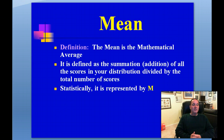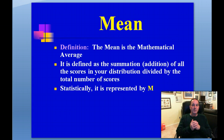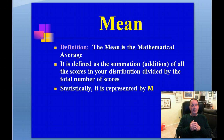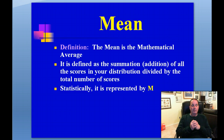What is the mean? The mean is just another term for the mathematical average — the average of the numbers. It's simply defined as the summation, meaning the addition, of all the scores in your distribution divided by the total number of scores. Statistically, it's represented by capital letter M. So anytime you see capital M in the literature, that is the mean score. Sometimes you'll also see it as a lowercase x with a bar over the top, which also represents the mean.